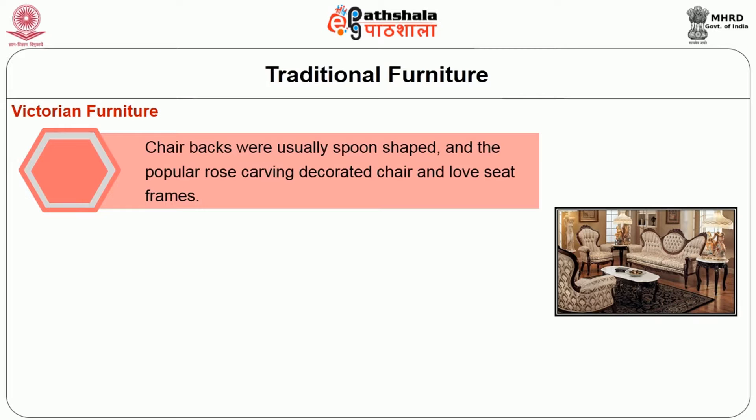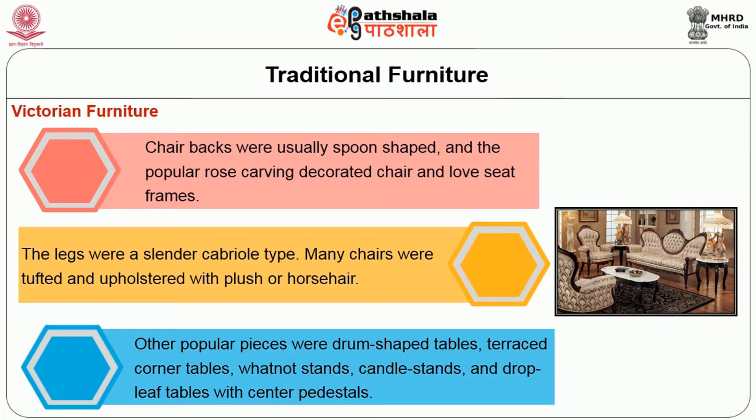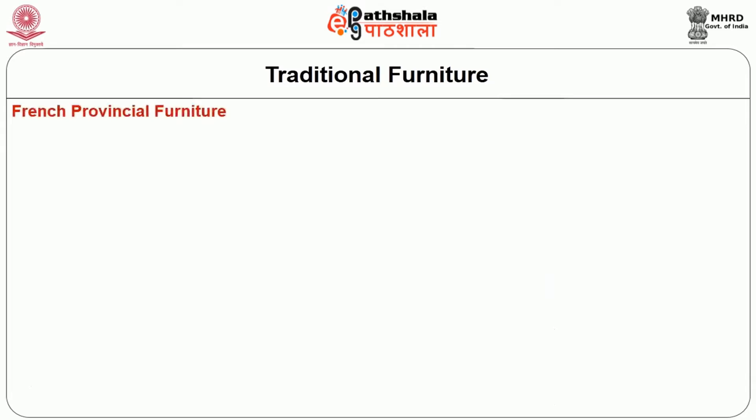Chair backs were usually spoon-shaped, and the popular rose carving decorated chair and love seat frames. The legs were a slender cabriole type. Many chairs were tufted and upholstered with plush or horsehair. Other popular pieces were drum-shaped tables, terraced corner tables, whatnot stands, candle stands, and drop leaf tables with center pedestals.